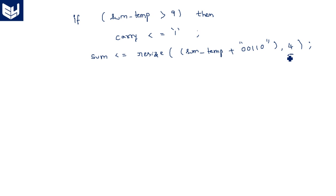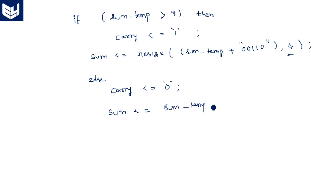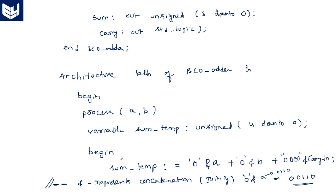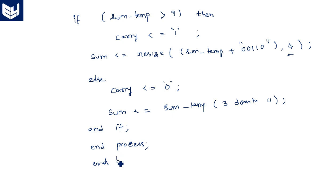If the result is not greater than 9, in the else clause: 'carry <= 0' and 'sum <= sum_temp(3 downto 0)' — we simply take the lower 4 bits from sum_temp since the MSB will be 0. Then 'end if; end process; end architecture behavioral'. This completes the VHDL program for the BCD adder. Thank you.